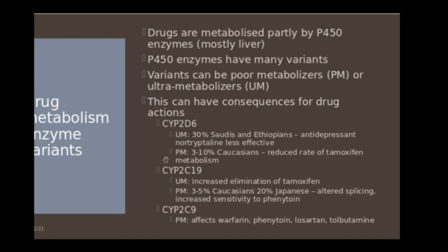For example, you can have variations in one of the P450 enzymes. These are the enzymes in the liver which metabolize toxins. One of these is CYP2D6. Some people are ultra metabolizers, and some people are poor metabolizers, and that varies between people of different racial origins. 30% of Saudis and Ethiopians are ultra metabolizers in CYP2D6, and because they metabolize nortriptyline, treating with nortriptyline is less effective.